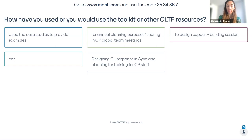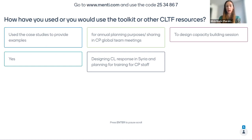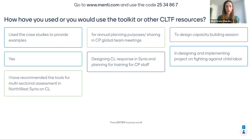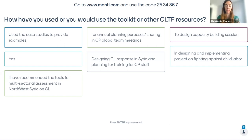Colleagues are designing the child labour response in Syria and planning training for child protection staff. The toolkit is quite practical, with bullet points on key actions to consider when designing a child labour response and who to involve. I can also see colleagues using it for annual planning purposes and sharing in child protection global team meetings — for awareness raising and sharing within the organization. It's good to see how people are using it and how we can learn from each other.